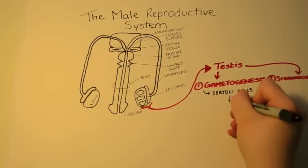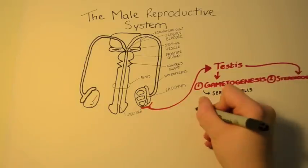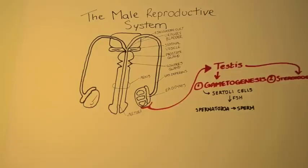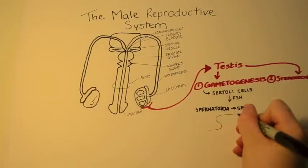The sertoli cells of the testes are responsible for gametogenesis. Follicle stimulating hormone from the pituitary gland causes the production of sperm from the spermatozoa.